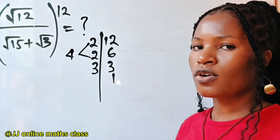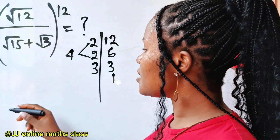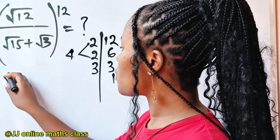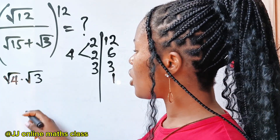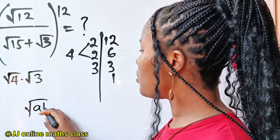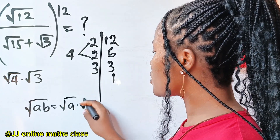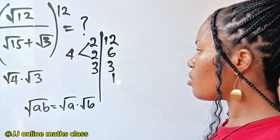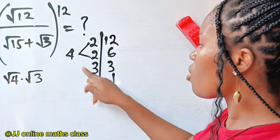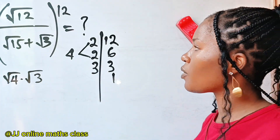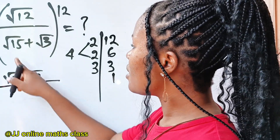So I'm now going to write this as square root of four multiplied by square root of three, because when you have square root of ab it is equal to square root of a multiplied by square root of b. So root 12 can be written as square root of four multiplied by square root of three, divided by...